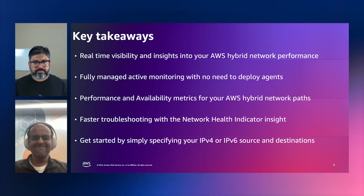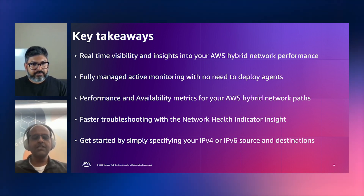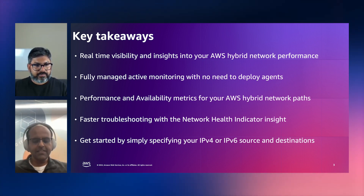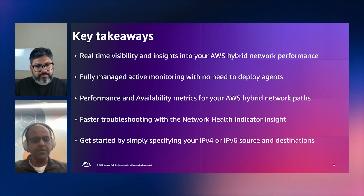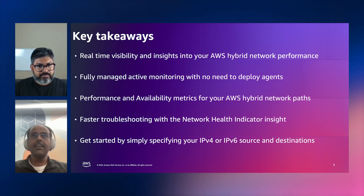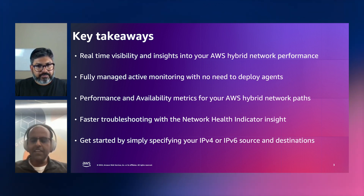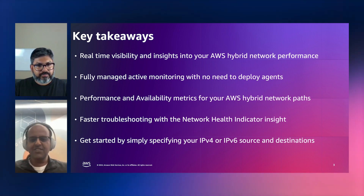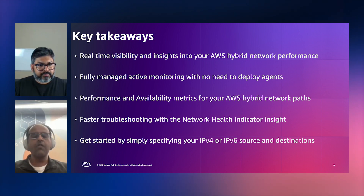In addition to that, we have a third metric called the Network Health Indicator. This metric currently works only over AWS Direct Connect, and it's an insight designed to reduce mean time to debug. What we intend to do with the Network Health Indicator is let customers know what caused the issue or where the issue was, in addition to telling them that there's an issue. Packet loss and latency let customers know there's an issue happening in the network, but the Network Health Indicator tells them if the issue lies within AWS or outside AWS. By giving customers this metric in real-time, we help them reduce debugging time and focus their energy on the right place.